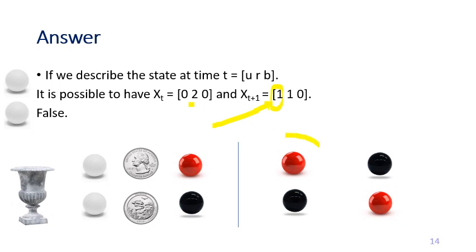The answer is again false. If you already have two red balls, there is no way you will have an unpainted ball again. Once a ball is painted — whether red or black — no matter what the coin toss says, you only flip its color to the opposite; there is no way to unpaint a ball. That's the end of the first video — we'll go on to see Markov chain in detail in the next video.